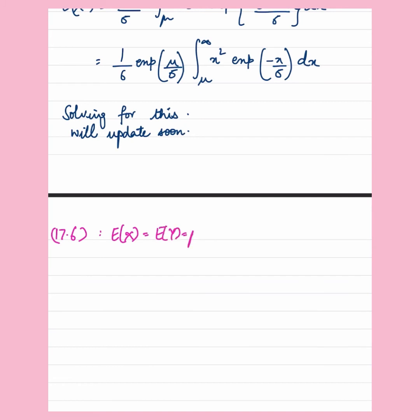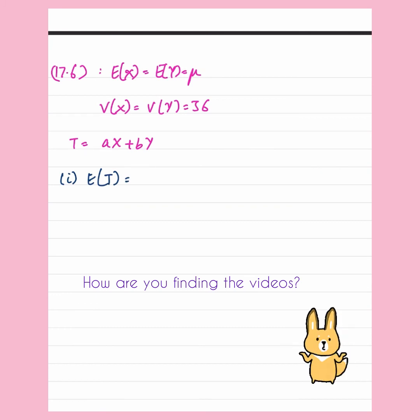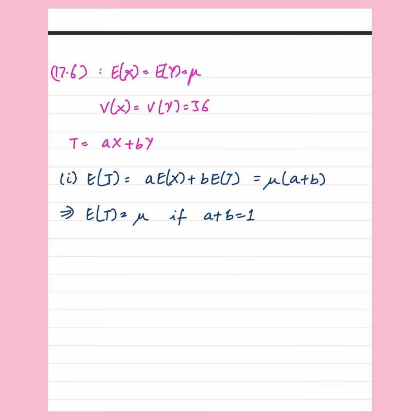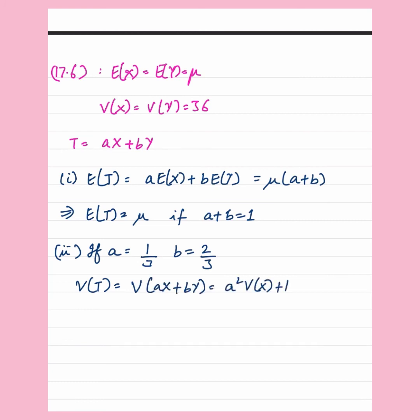Question number 17.6. We have been given X and Y as independent random variables with the same unknown mean mu, and X and Y have variance 36. We have another estimator T which is a linear combination of X and Y, and we aim to find when T can be an unbiased estimator of mu. Expected value of X and Y are equal and are mu. T equals aX plus bY. Finding expectation of T: a times expected value of X plus b times expected value of Y equals mu times (a plus b). In order that T should be an unbiased estimator of mu, a plus b has to equal 1. Also, if a is given as 1/3 and b is given as 2/3, we find the variance of T.